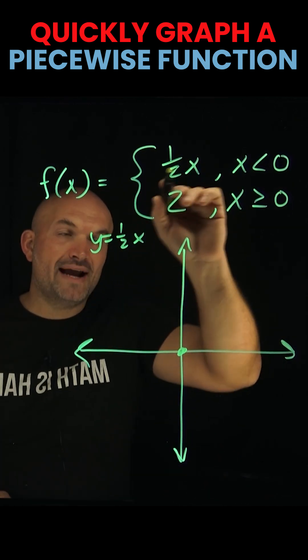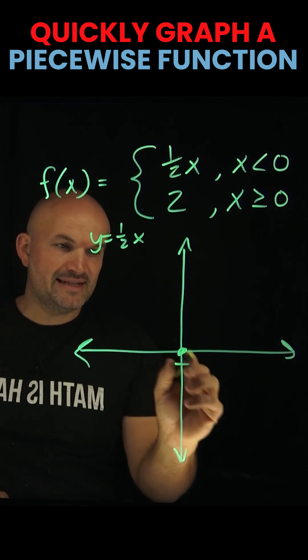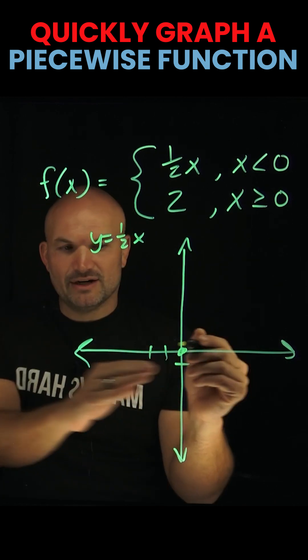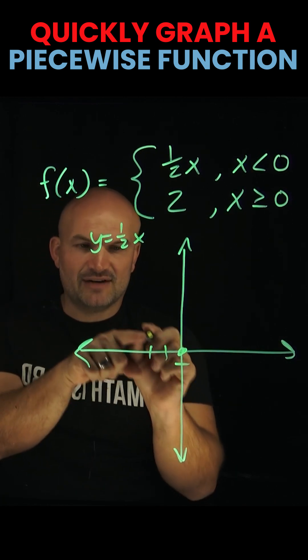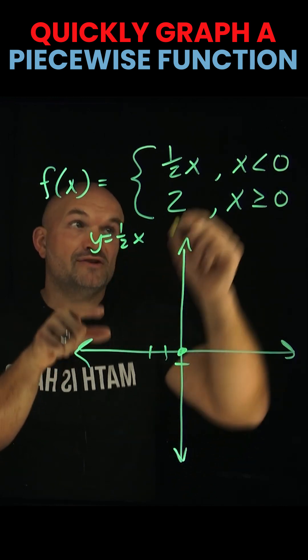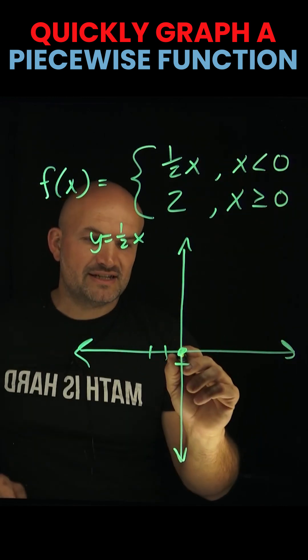So how do you graph (1/2)x to the left? That's going to be down one to the left two. We're going in this direction because this is negative one, negative two. Those are x values that are less than zero, which satisfies this constraint.